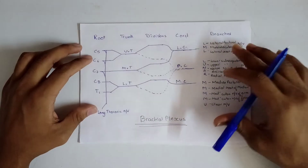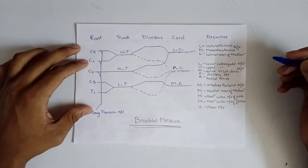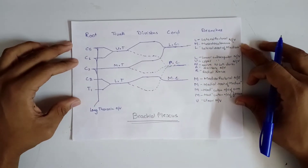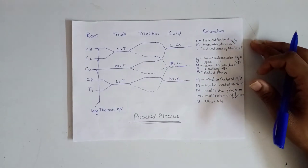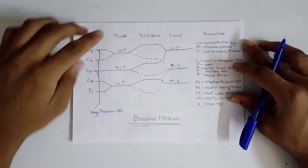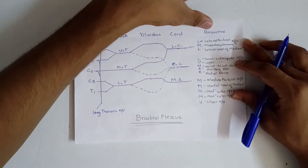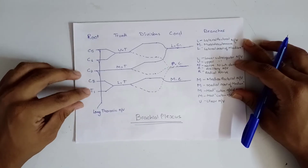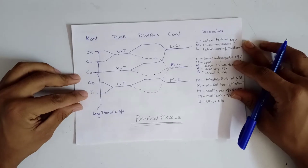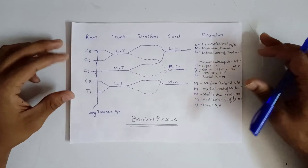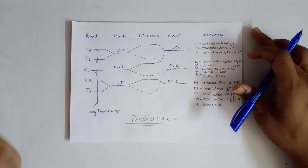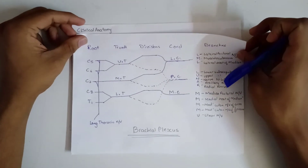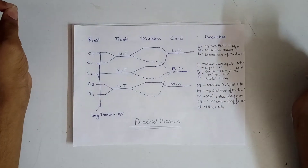In the previous video I covered brachial plexus and a simplified way to draw it, including roots, trunk, division, cord and branches — C5, C6, C7, C8, T1. C5, C6, C7, C8, T1 are the roots of the brachial plexus. Related to this, we are going to learn today the clinical manifestations of brachial plexus.